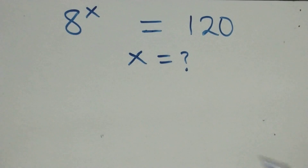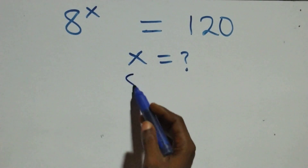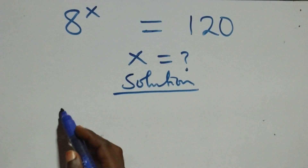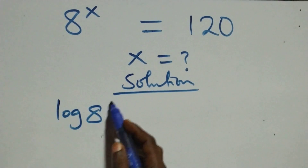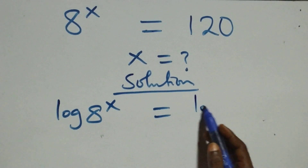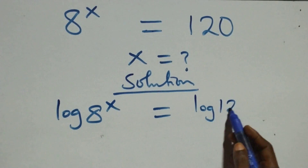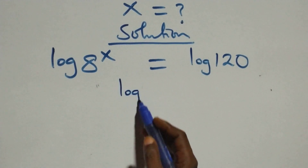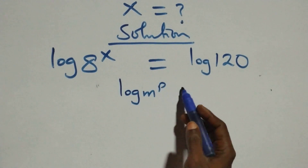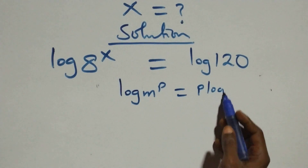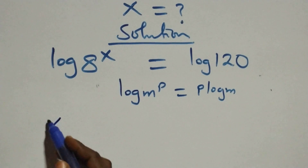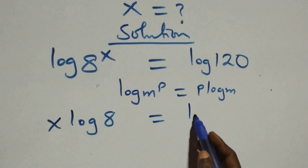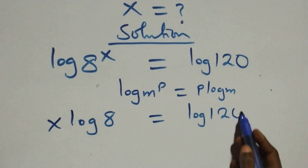Hello, you are welcome. Here we solve this exponential equation. Taking the log on both sides, we have log of 8 raised to power x equals log of 120. Applying the power rule of logarithms — when we have log m raised to power p, this is the same as p log m — this becomes x times log 8 equals log 120.